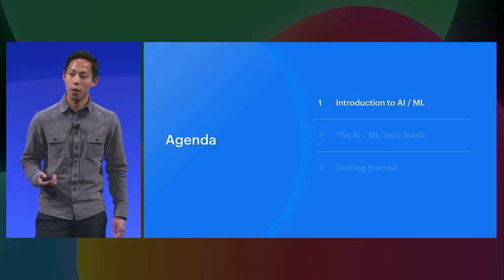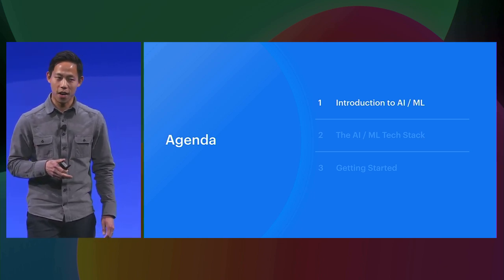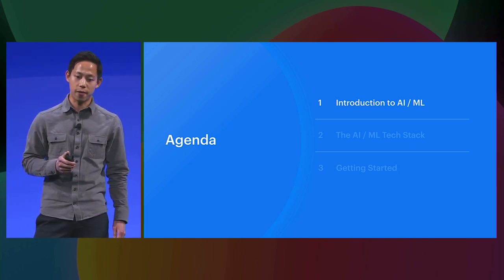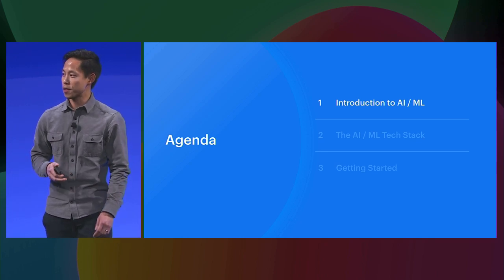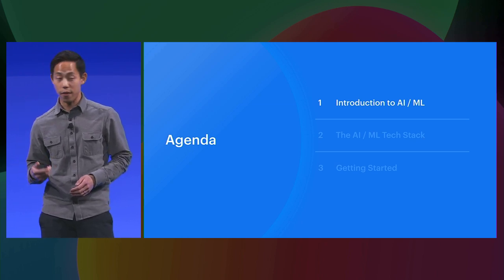One area that's come up a lot has been machine learning and machine learning development. At F8 this year, we've got 13 sessions covering AI, everything from how Facebook builds and deploys machine learning systems to new open source tools you can check out today. For anyone new to machine learning development, I wanted to spend the next 15 minutes quickly going through some common terminology, concepts, and the developer workflow and tools that you can start using now.